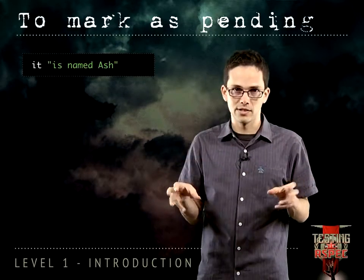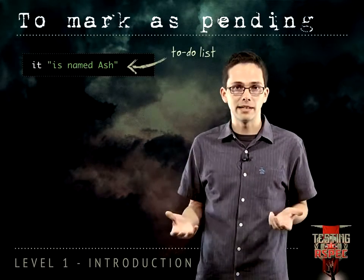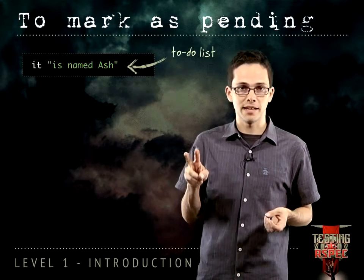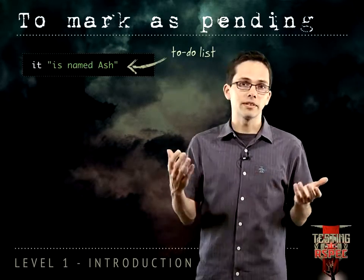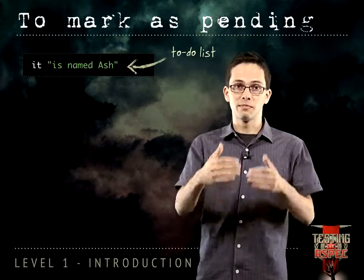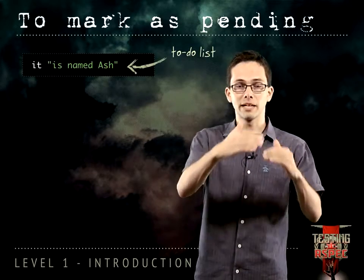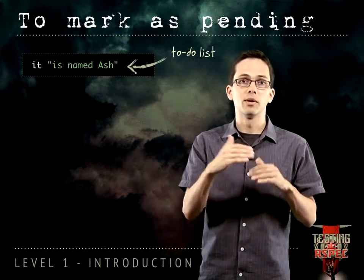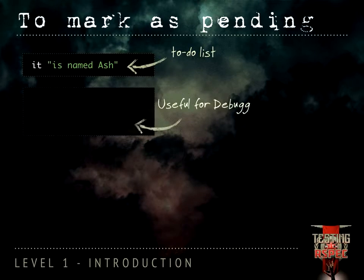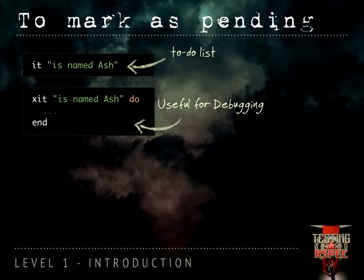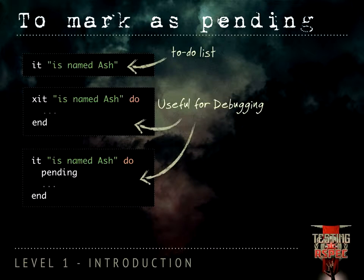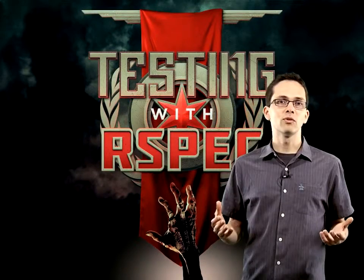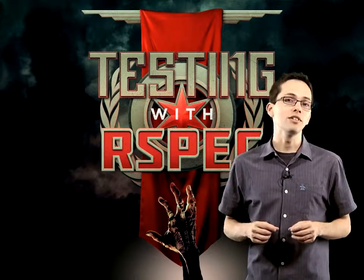As you saw at the beginning of this level, one way to make an example pending is to simply leave off the example body — just have the it without the do and the end, and it will be pending. There are two other ways: first, by putting an x before the it — so just write xit — that will cause the example to be pending. You can also simply use the pending keyword inside of your example. That's all we have for level one — it's time to get your hands dirty with the challenges, and we'll see you in level two.